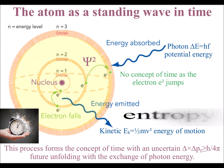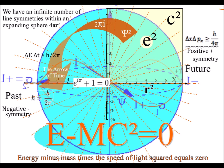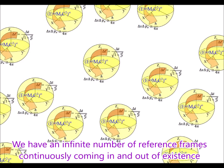This can be represented mathematically. If instead of energy equals mass times the speed of light squared, we have energy minus mass times the speed of light squared equals zero. The zero can represent t equals zero, the moment of now, within an individual reference frame.